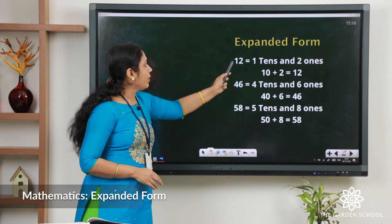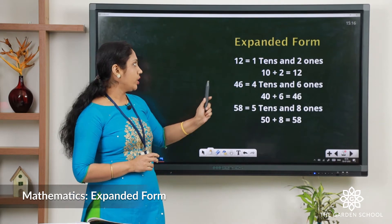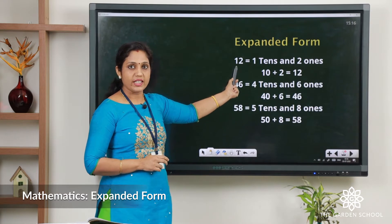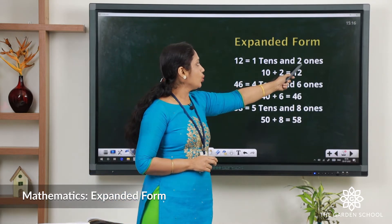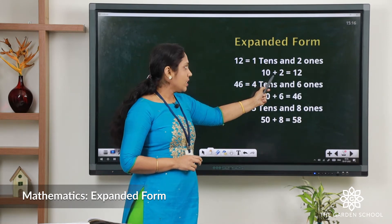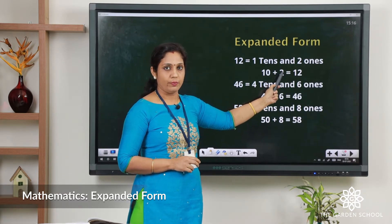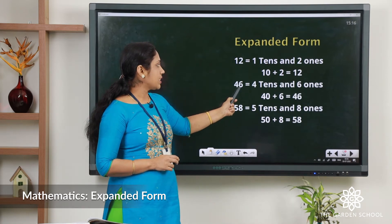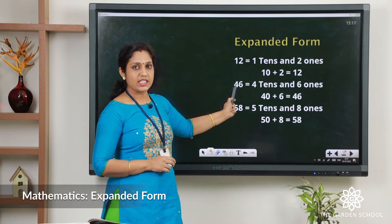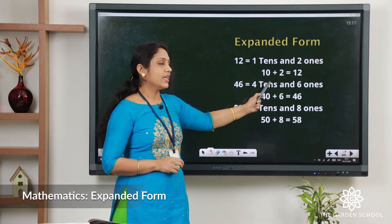Here you can see the number 12. It is a two-digit number. We count two ones and one ten. We write it as one ten and two ones. One ten is written as 10 plus 2 equals 12. This is how we write in expanded form. Second example: 46. Six comes in the ones place, four comes in the tens place, so we can write it as four tens and six ones.